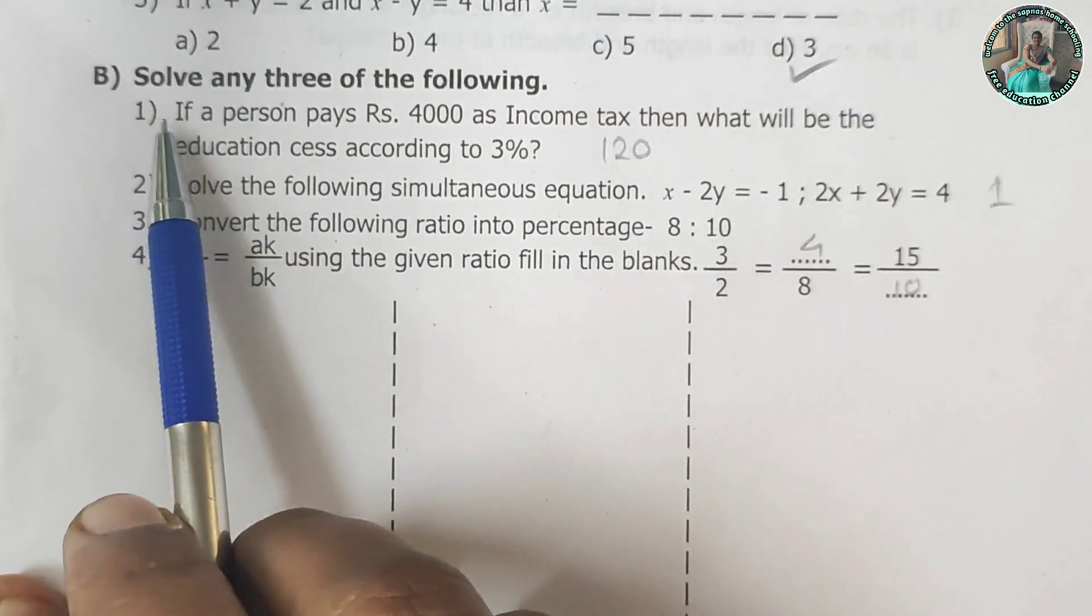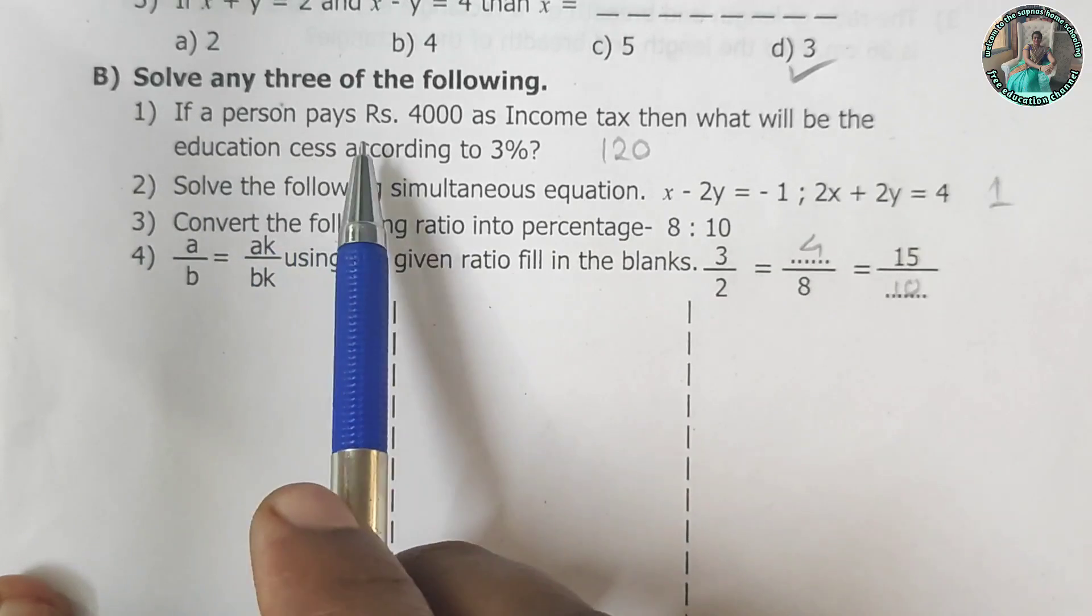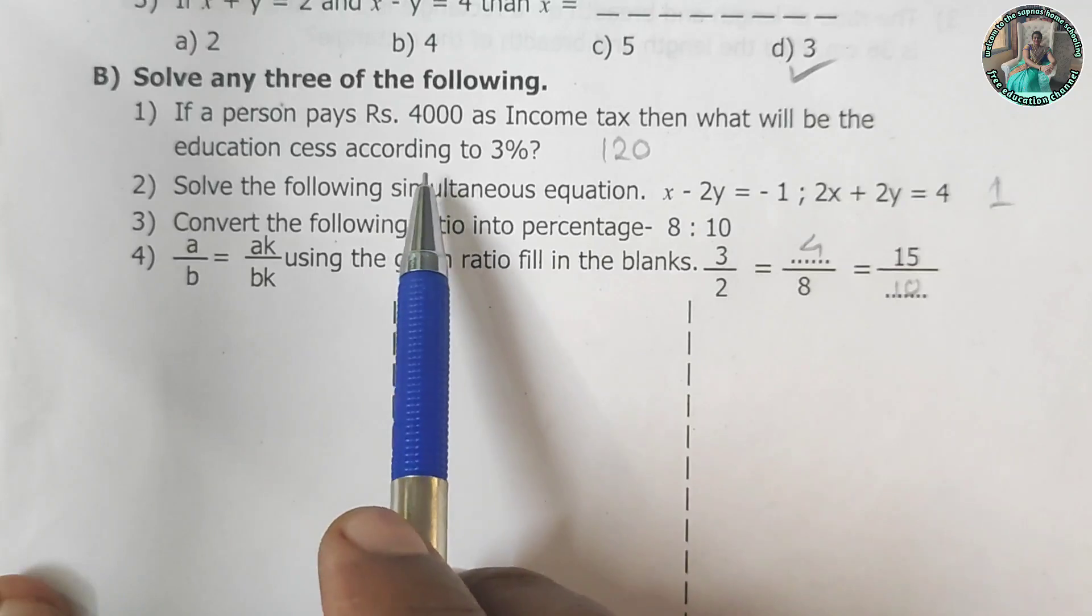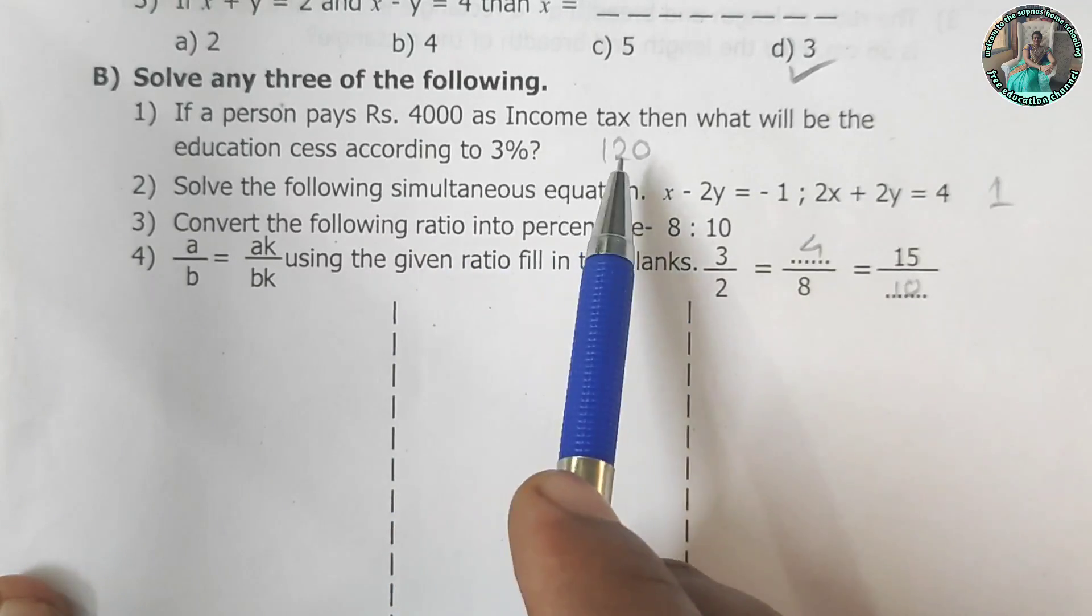Question 1b. Solve any three of the following. If a person pays Rs. 4000 as income tax, then what will be the education cess according to 3 percent? The answer is 120.